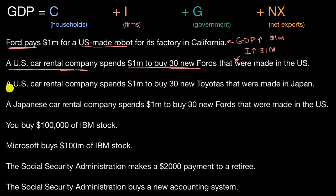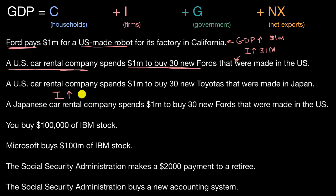Now let's look at the third scenario: a US car rental company spends $1 million to buy 30 new Toyotas that were made in Japan. How is this different? In this scenario, you still have a US firm investing in physical capital — it's spending a million dollars — so investment would actually go up by $1 million. But it's not investing in things made in the United States; it's investing in things made in Japan.